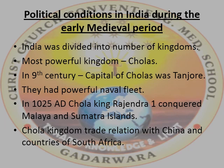The Chola kingdom had a very powerful naval fleet. In 1025 AD, King Rajendra I conquered the Malaya and Sumatra islands. The Chola kingdom had trade relations with China and countries of South Asia.